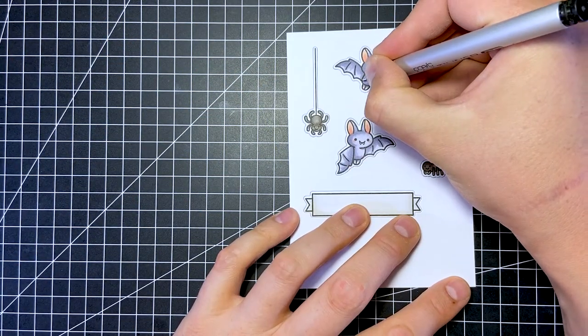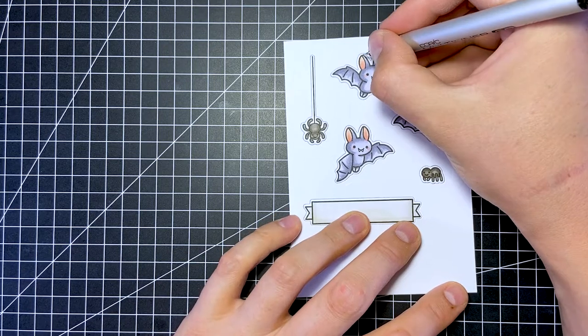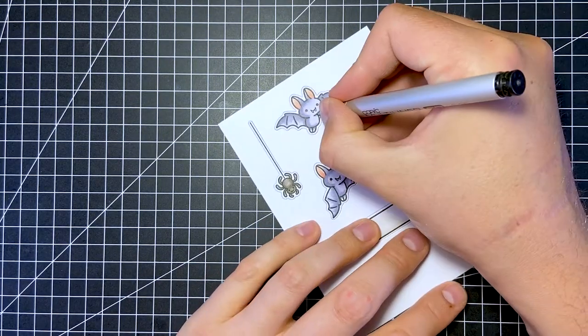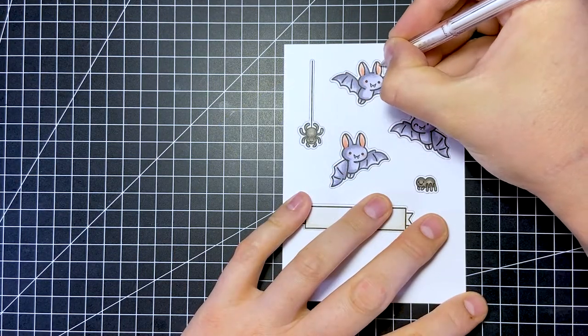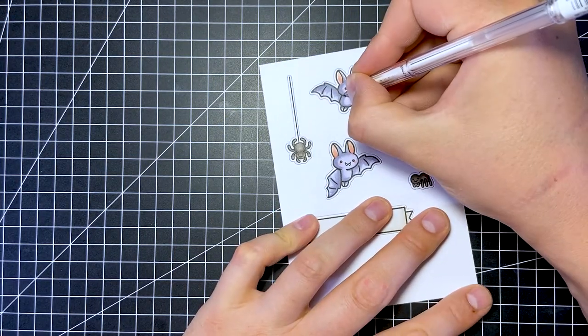After the coloring, I always like to go over the inner lines with a black fineliner. This brings back some detail that got a bit dull because of the coloring. It's totally optional, but for me it makes a difference. To finish the images off, I'm adding highlights with a white gel pen.